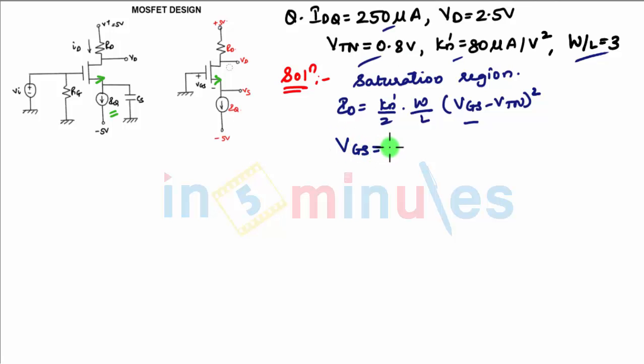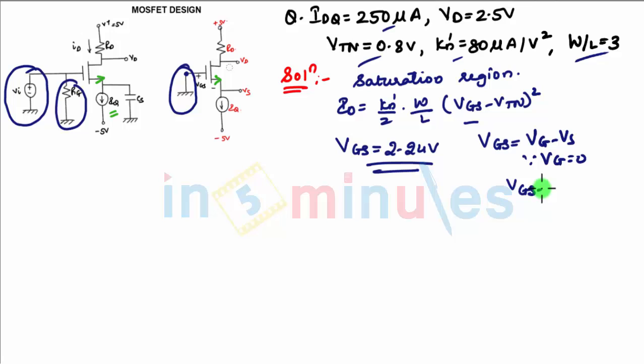From the diagram, this is an AC source which we are not considering in DC analysis, so it has been open circuited. Since the current flowing through RG is zero, we are not considering these two over here, so it is grounded. VGS is VG minus VS. Since VG is 0 from the diagram, the gate is grounded, and VGS is minus VS, or VS is minus VGS.